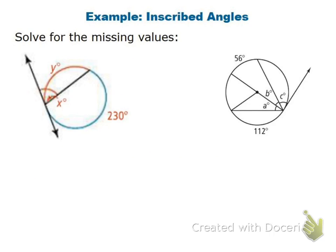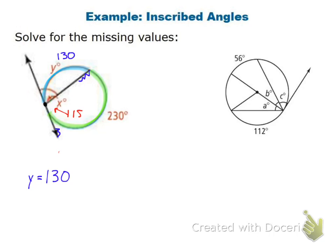With this first problem, angle X and angle Y both happen on the outside of the circle. Angle X is eating the arc that's 230 degrees, so to find angle X I cut 230 in half and get 115. Since the green arc is 230, the blue arc is 360 minus 230, which is 130. That angle is 115 and X is actually eating the 130-degree arc, so I cut 130 in half and get X equals 65. Y is equal to 130.